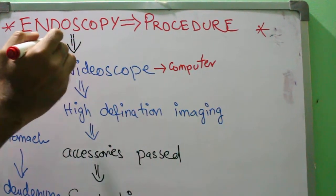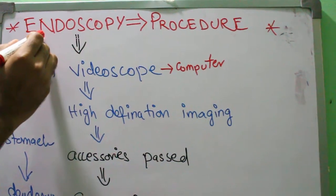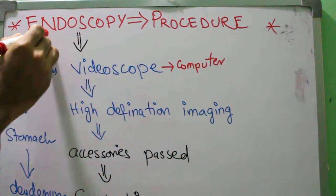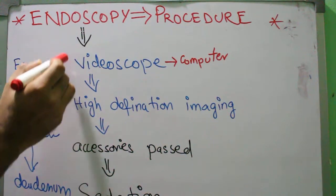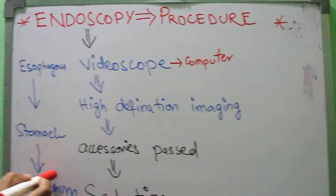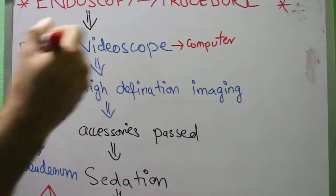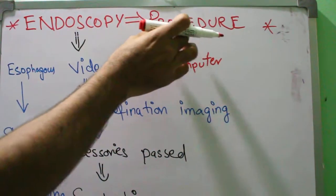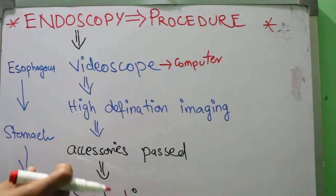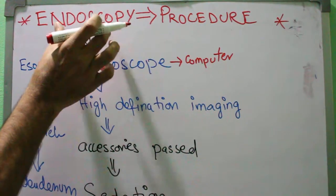It is performed in hospitals to see if there is a problem in the stomach, esophagus, or duodenum. Now this procedure, let me share the steps. Endoscopy has two words: endo and scopy.